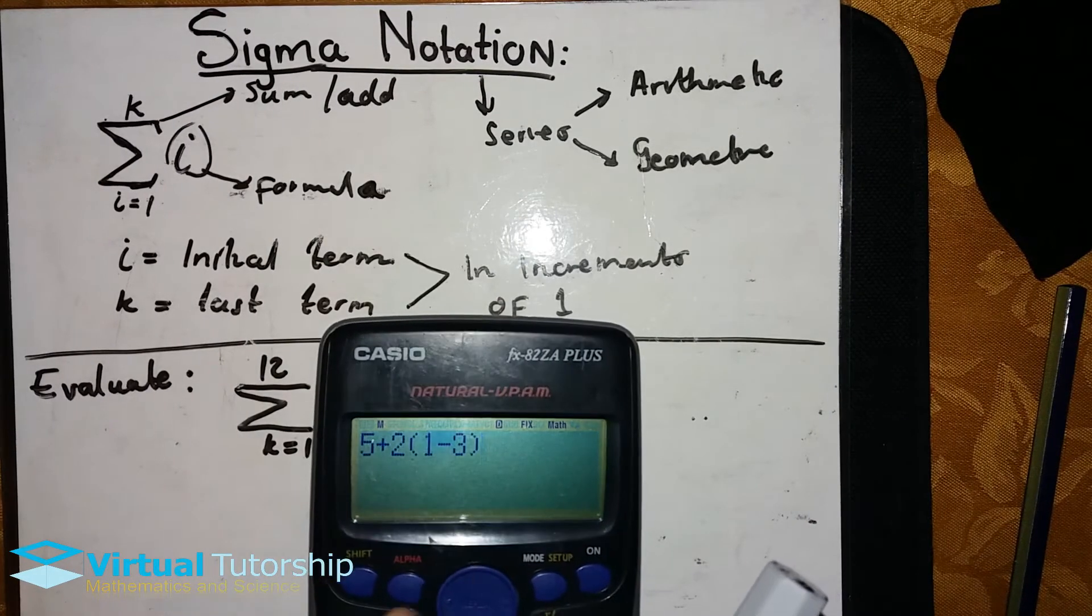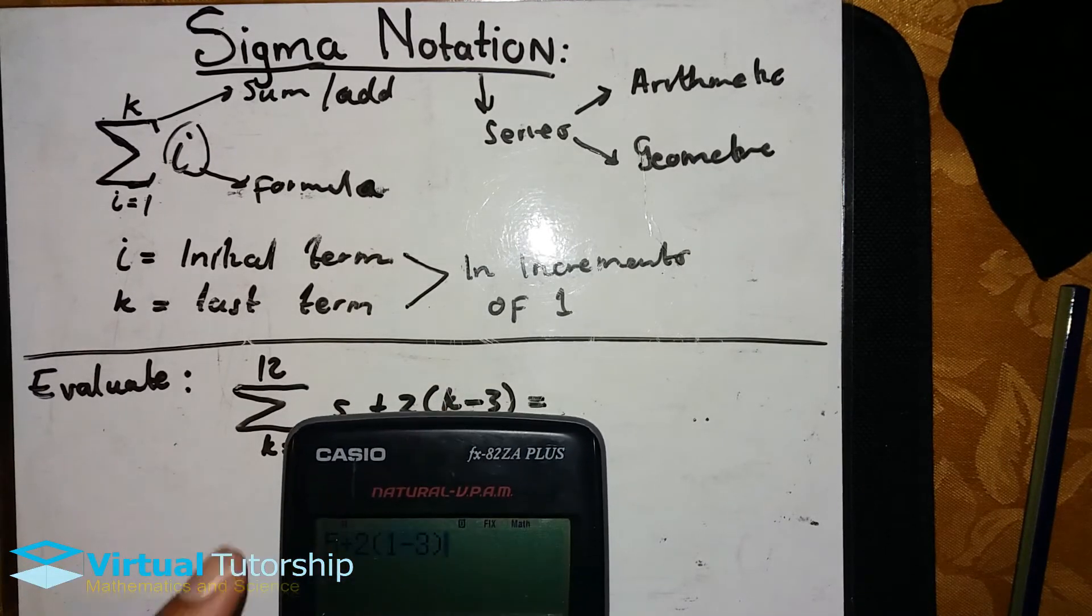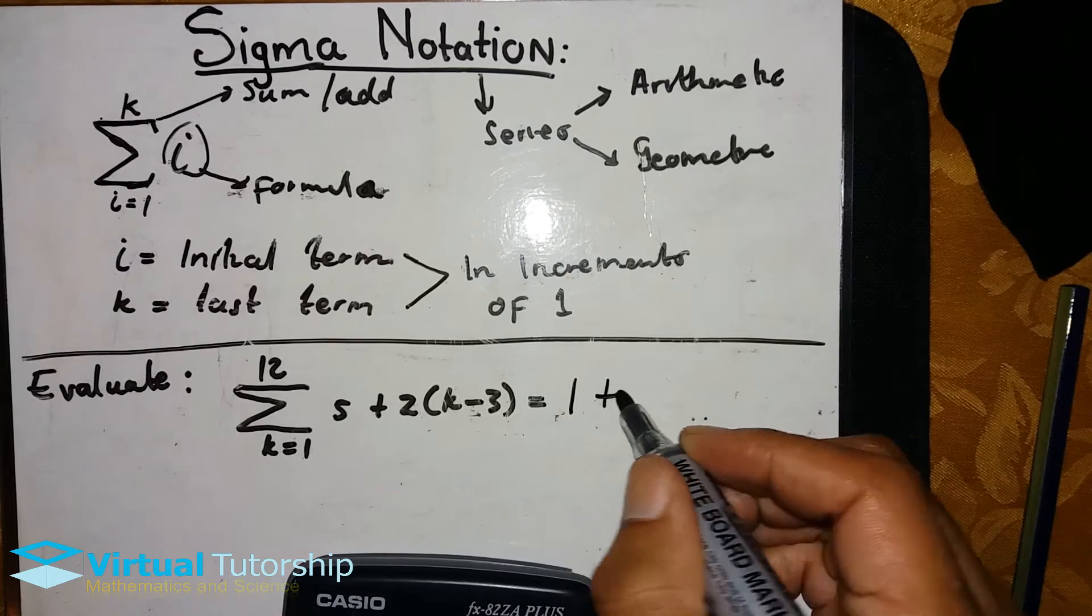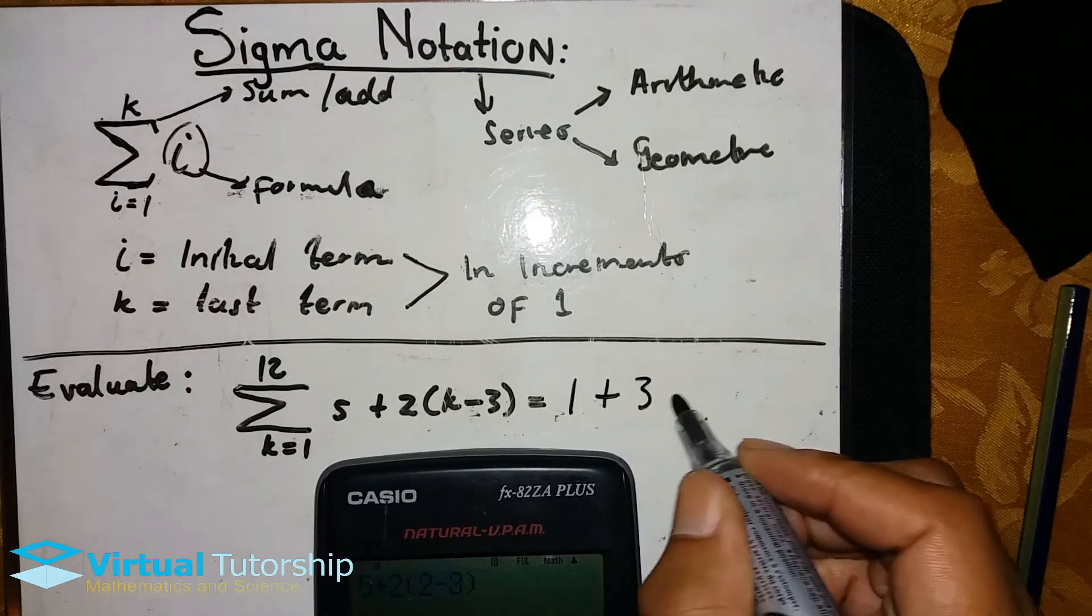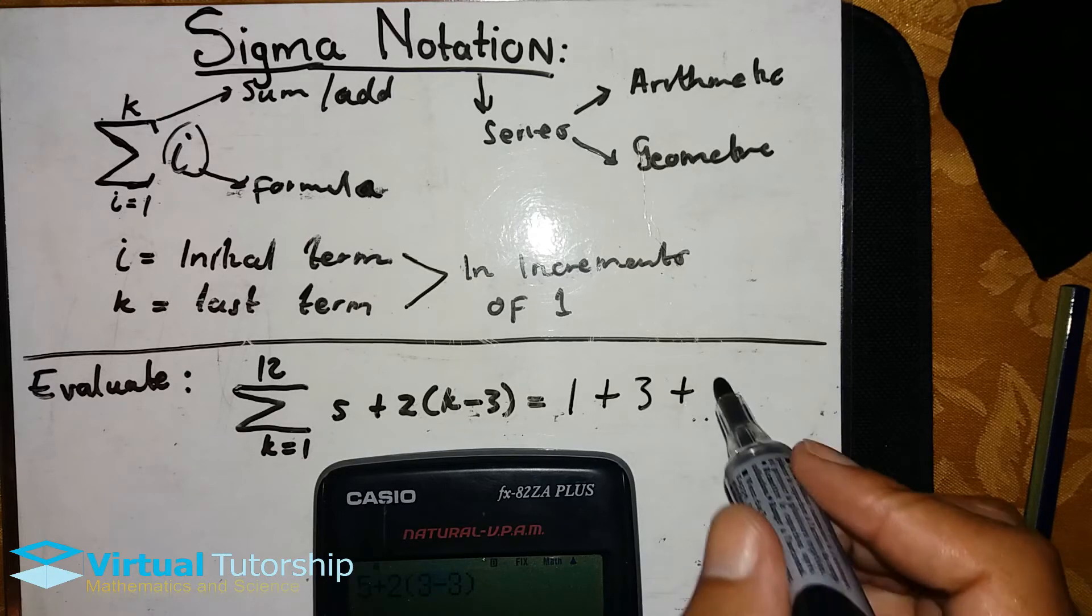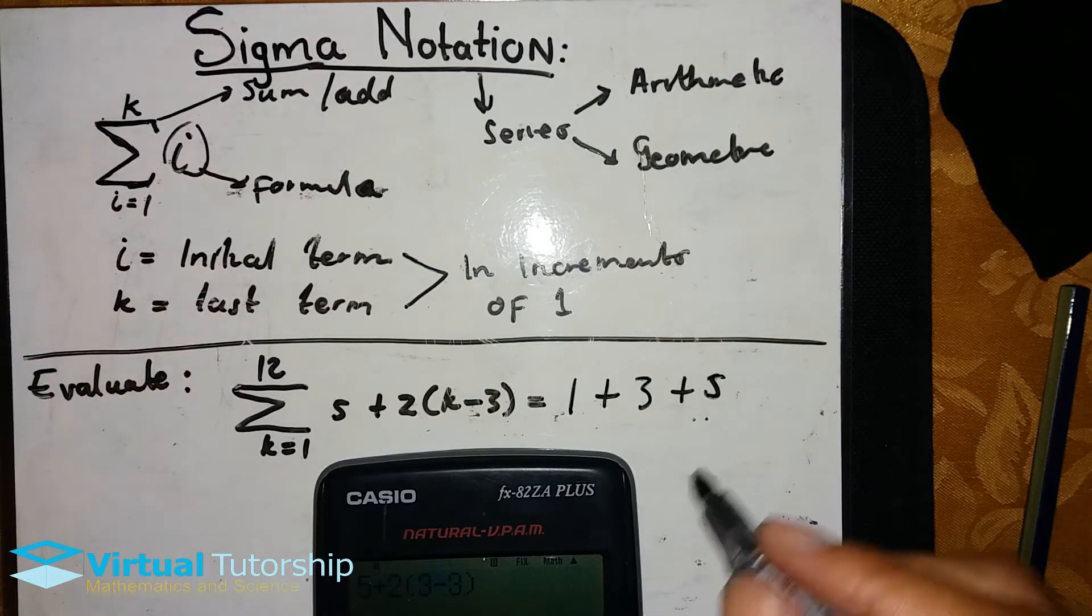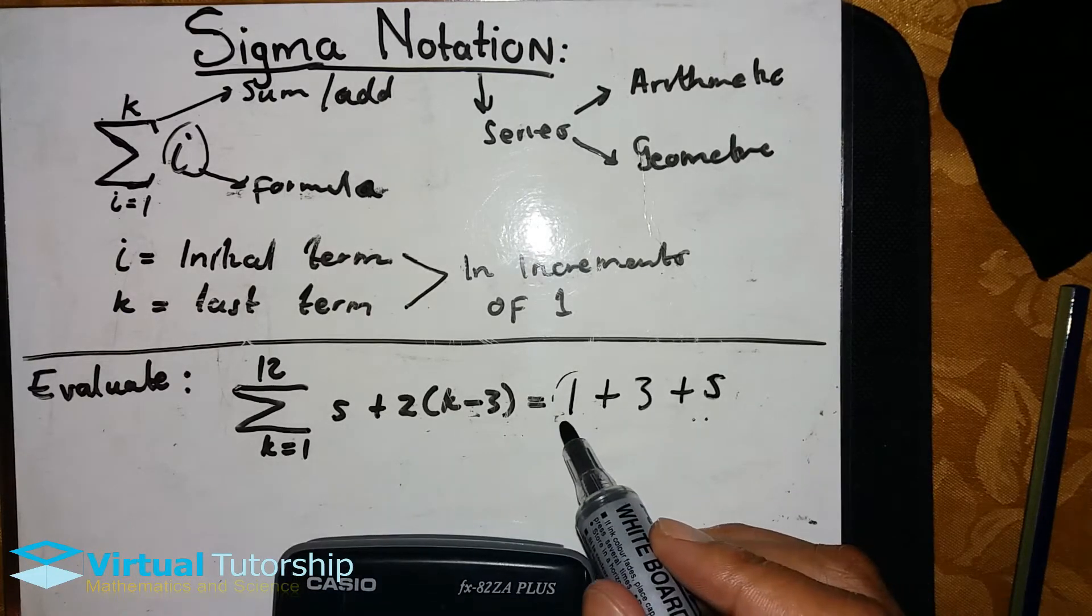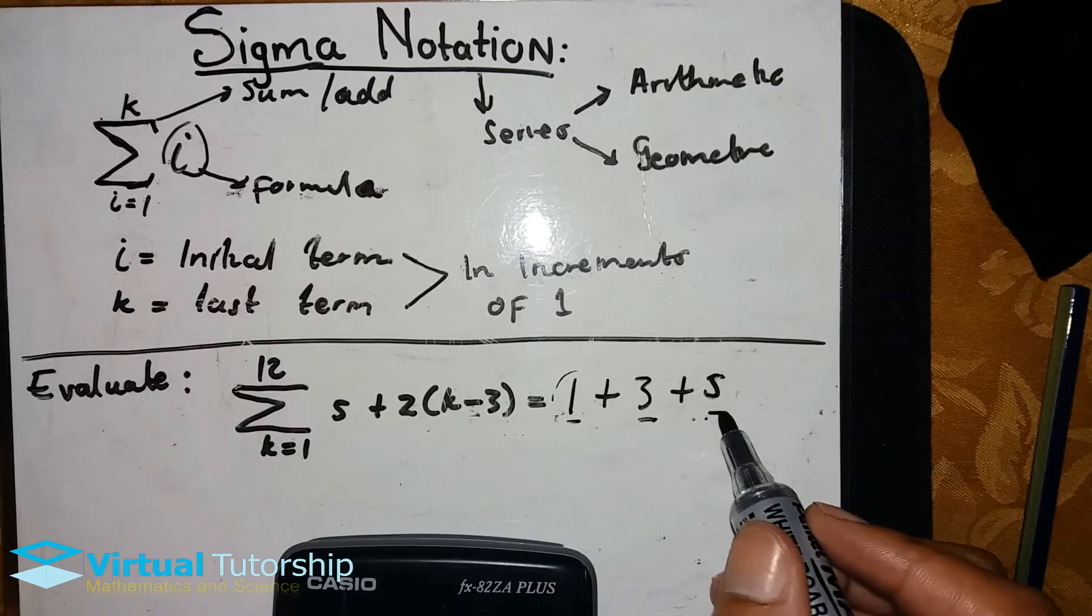So this 5 plus 2 in brackets k—the initial k value is one, that's why we substitute to one. The first term is k equals one, the next term we substitute is two, then k equals one, then three, then the third term value is three, in increments of one. So k equals one, two, three. So we expand it for the first three terms.